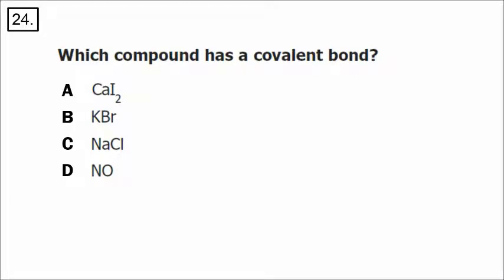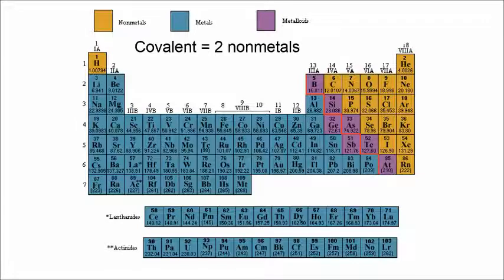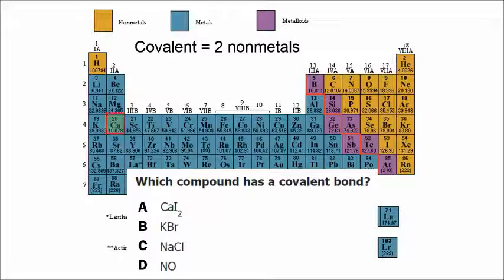In number 24, two nonmetals tend to form a covalent bond, whereas a metal and a nonmetal tend to form an ionic bond. Looking at the answer choices: calcium is a metal and iodine is a nonmetal; potassium is a metal and bromine is a nonmetal; sodium is a metal and chlorine is a nonmetal. The correct answer is D because both nitrogen and oxygen are nonmetals, so they form a covalent bond.